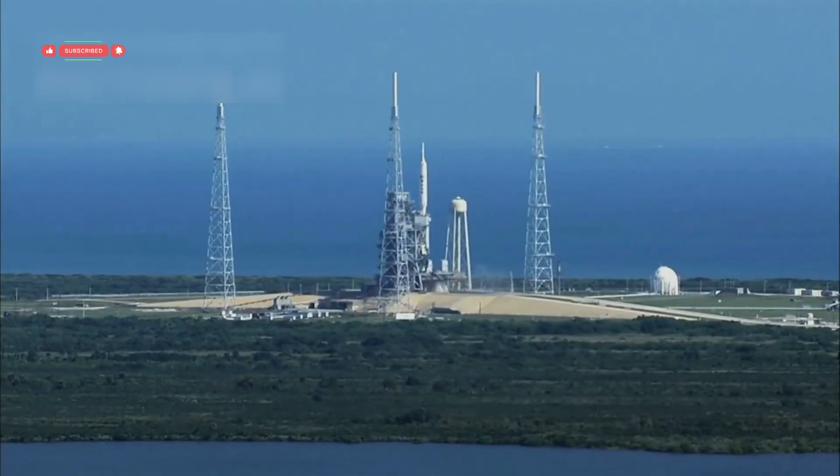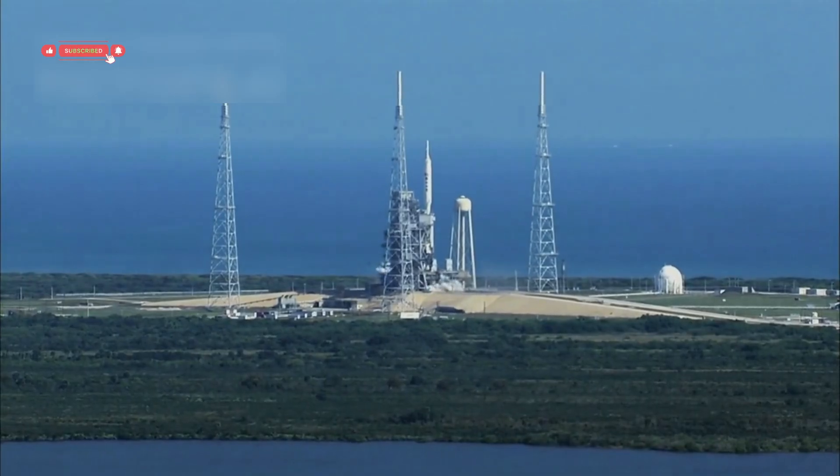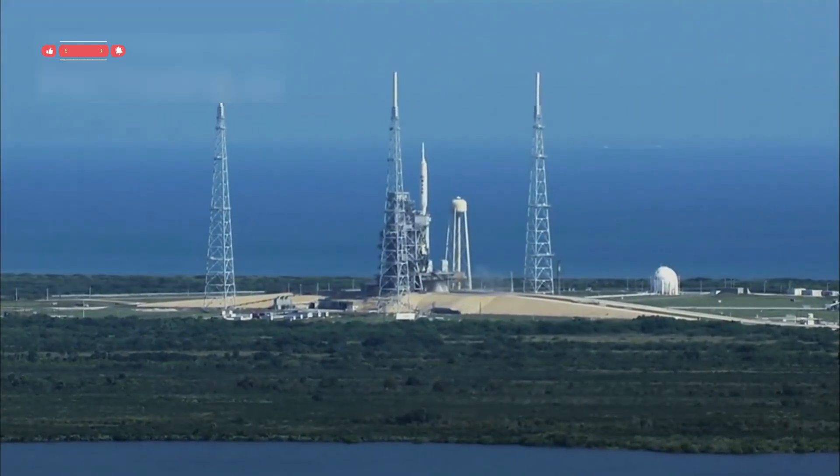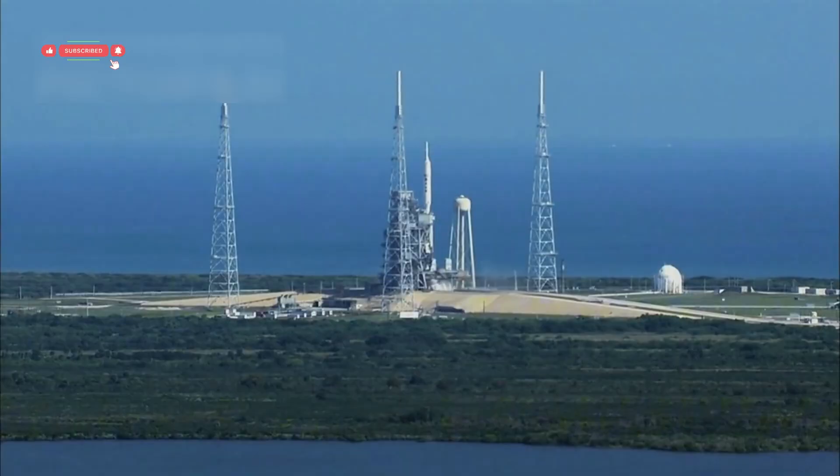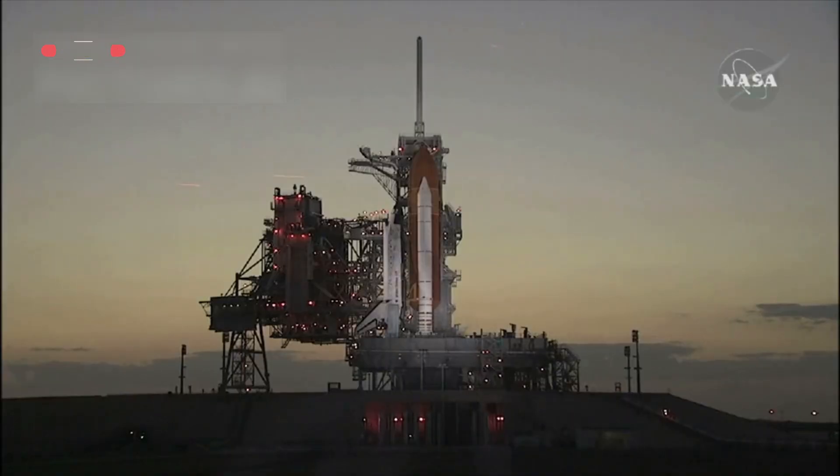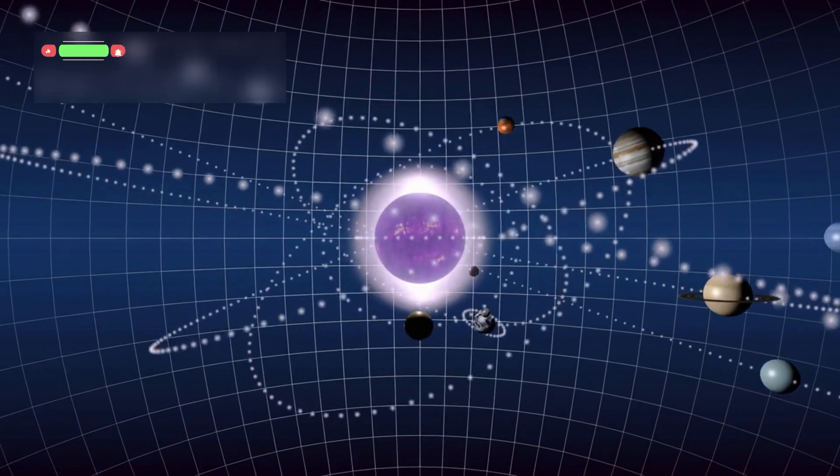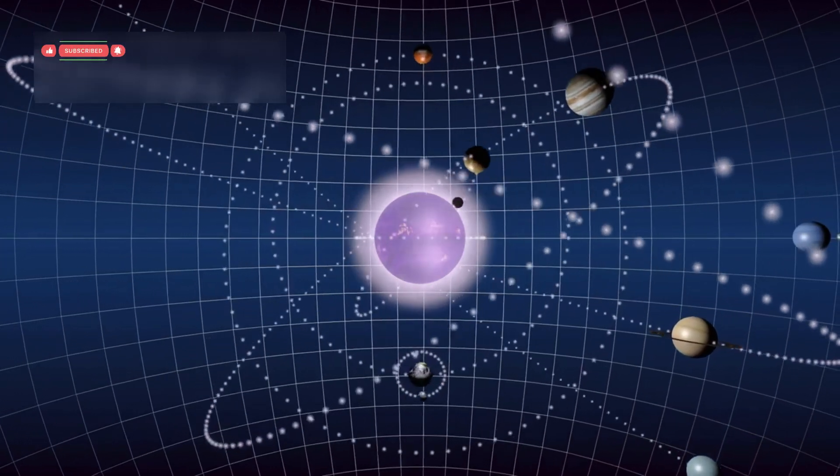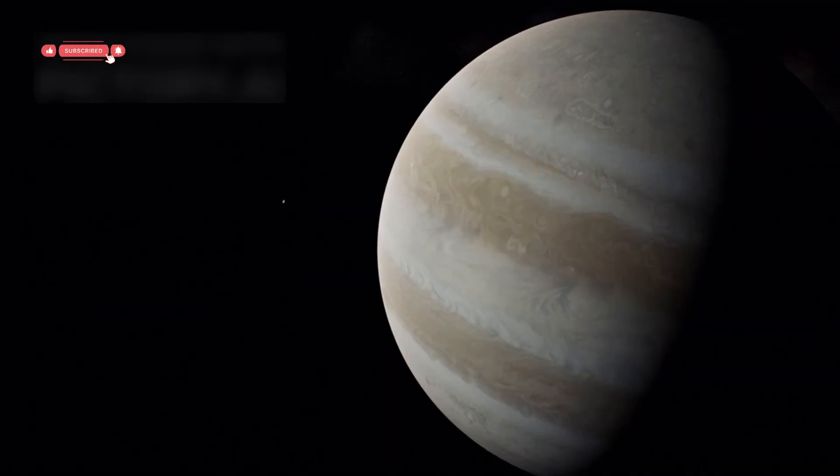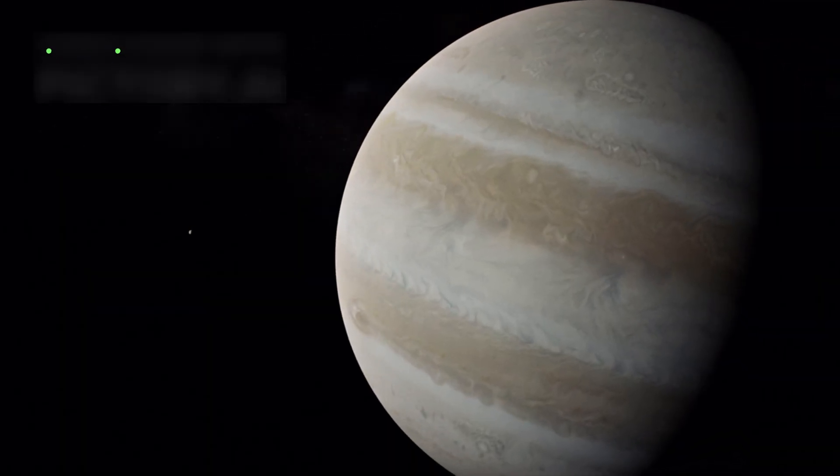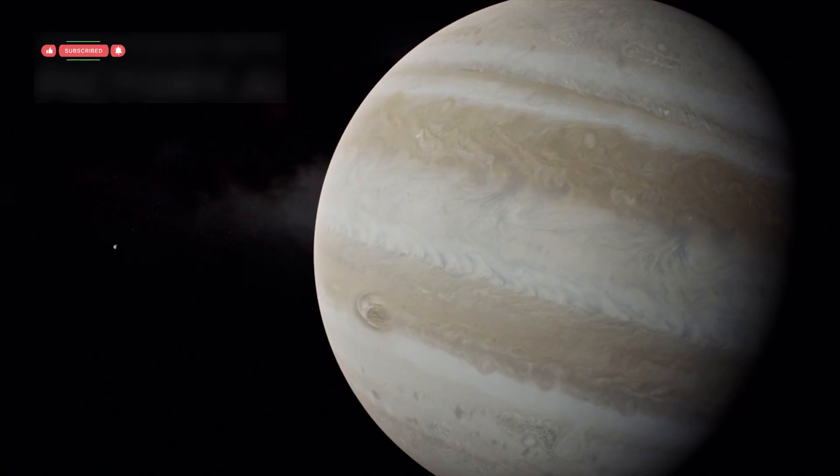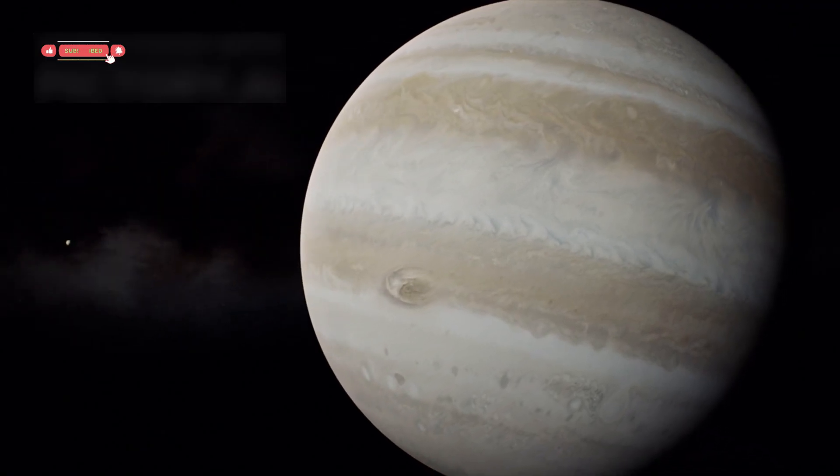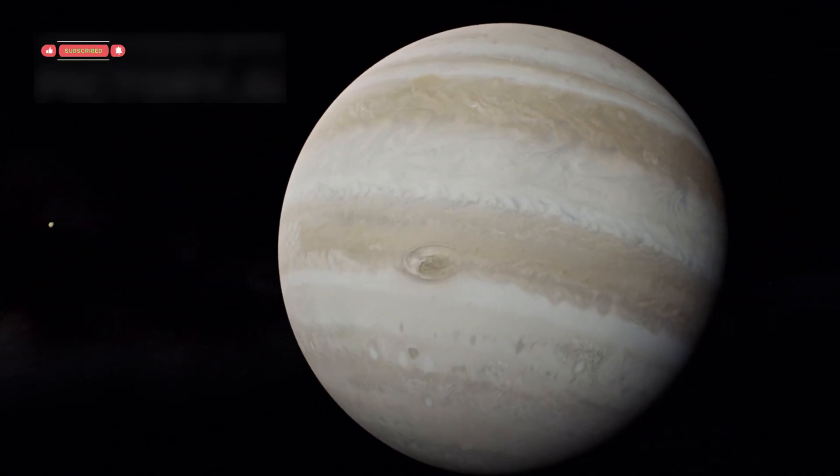Voyager 1 launched on September 5, 1977 from Cape Canaveral, Florida, aboard a Titan rocket. Voyager 2 had lifted off just 13 days earlier. The original mission was simple: study the giant planets of the solar system. Voyager 1 took a fast track to reach Jupiter and Saturn first, while Voyager 2 had a longer route that would carry it past those worlds to even more distant planets.